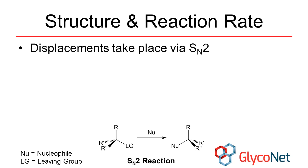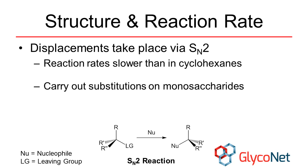These electron-withdrawing groups also slow down the reaction rate compared to cyclohexane. Next, it is a good idea to carry out substitutions at the monosaccharide stage whenever possible.